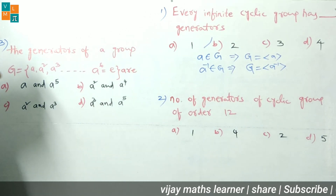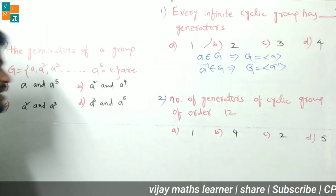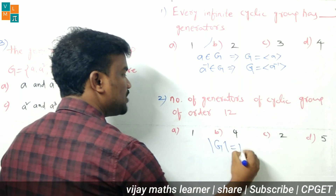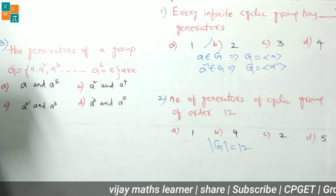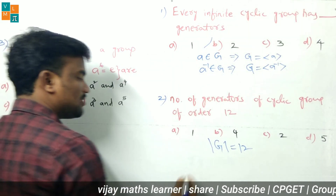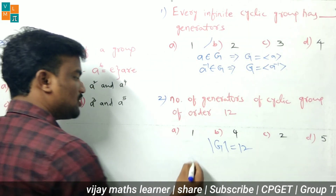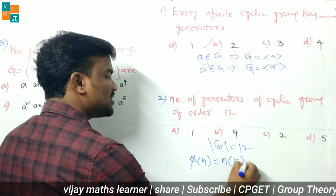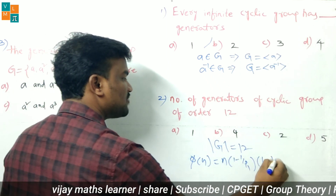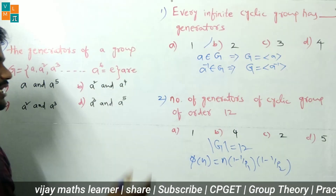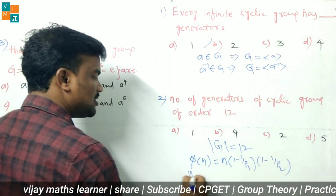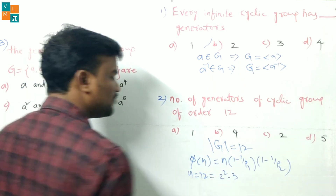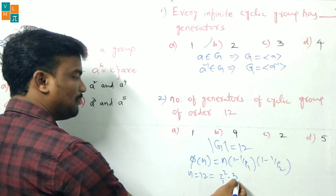The second question: find the number of generators of a cyclic group of order 12. G is a cyclic group with order 12. We use Euler's totient formula: φ(N) = N × (1 − 1/P₁) × (1 − 1/P₂) × .... The prime factorization of 12 is 2² × 3, so P₁ = 2 and P₂ = 3.